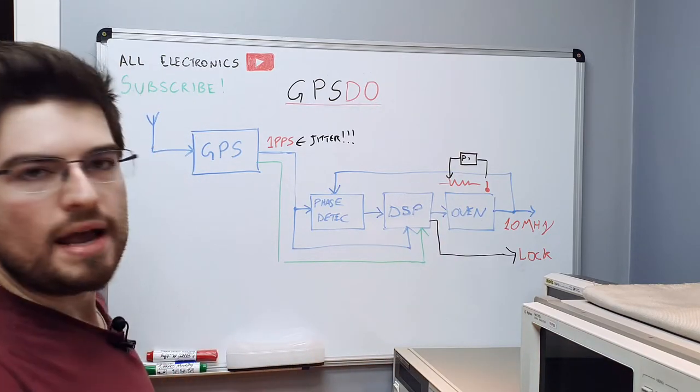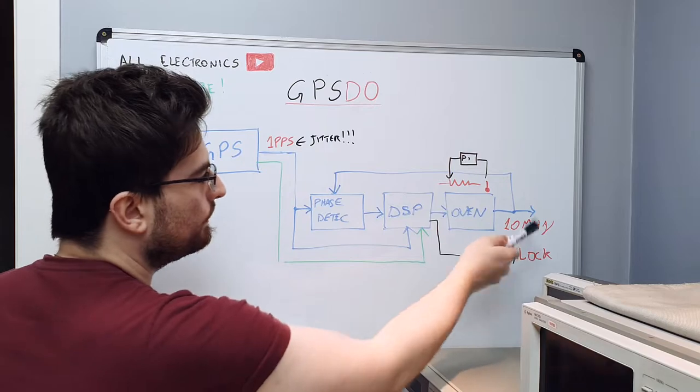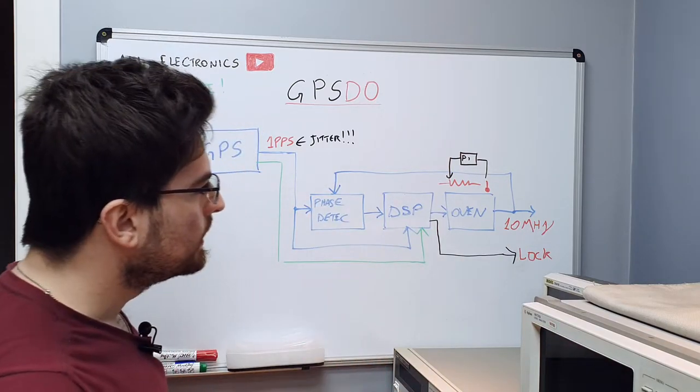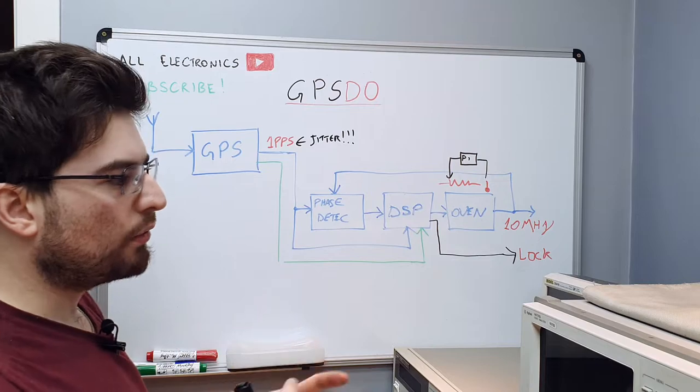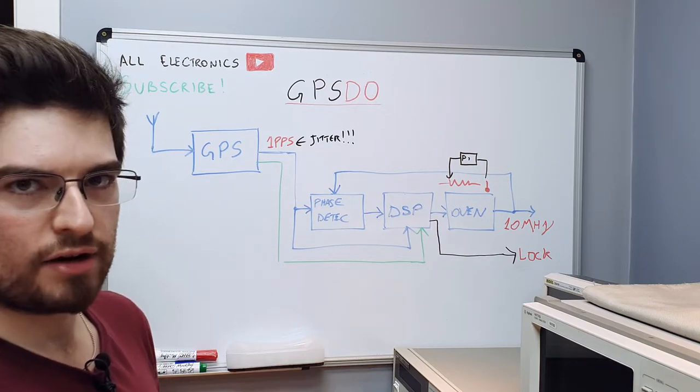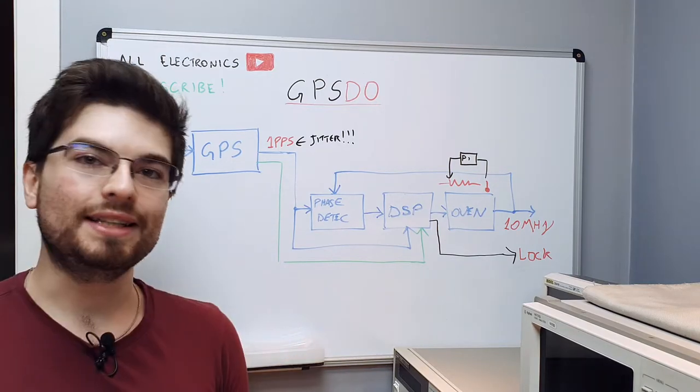So this is the basic block diagram. On the output we're gonna have the 10 meg signal that is precisely locked to the global reference and the global frequency reference we have on the GPS system. This is the part 1 of this series.